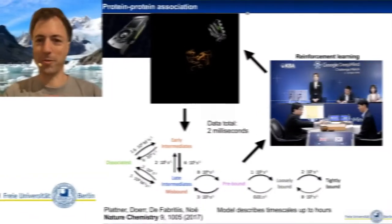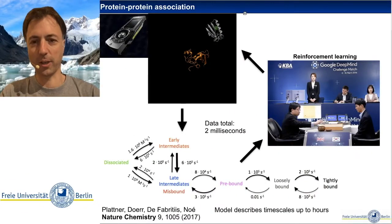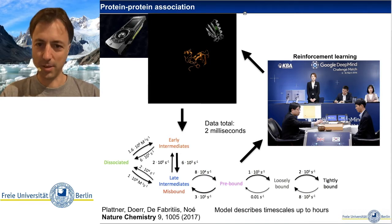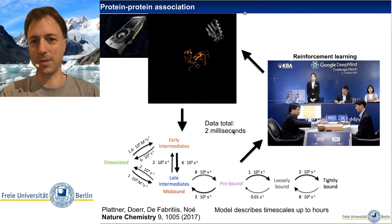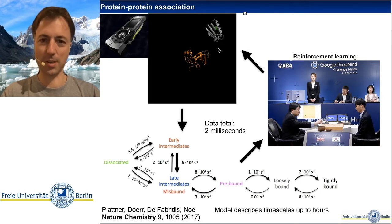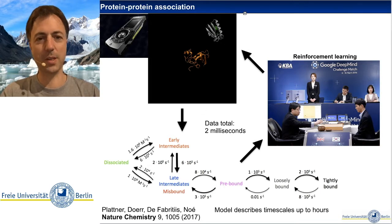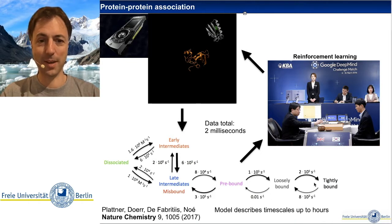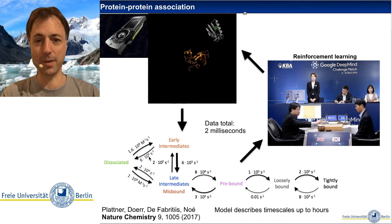By combining all of these tricks — molecular dynamics, adaptive sampling, Markov state modeling, deep learning, etc. — we can solve this protein-protein association-dissociation problem with two milliseconds of simulation data. And in contrast to the one hour time it takes for a single dissociation event, this is actually something we can do.